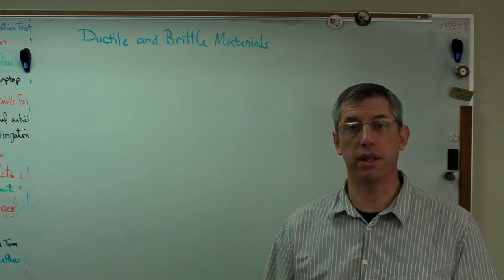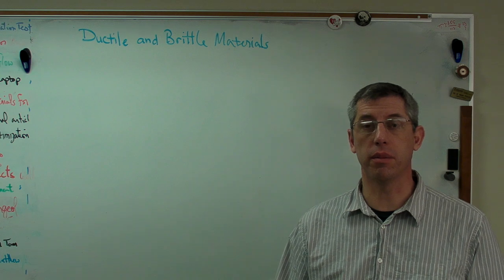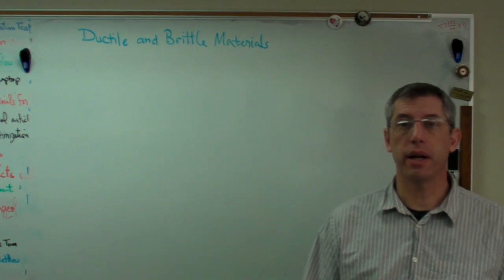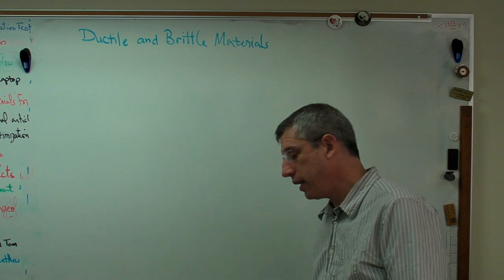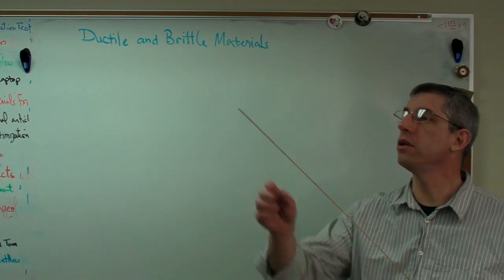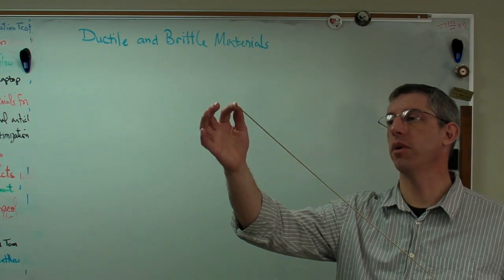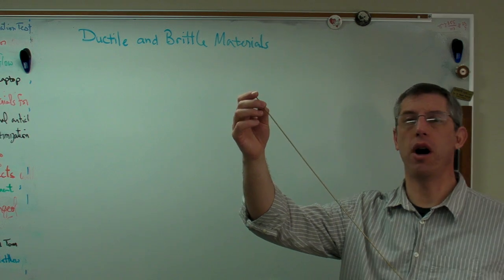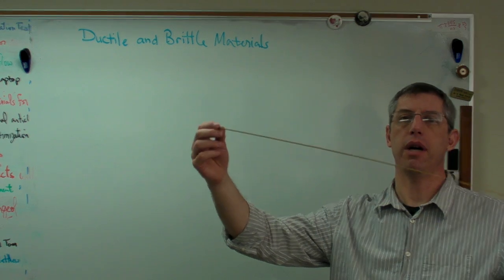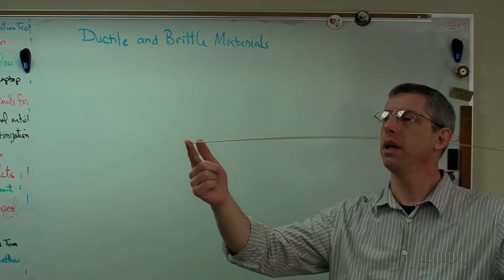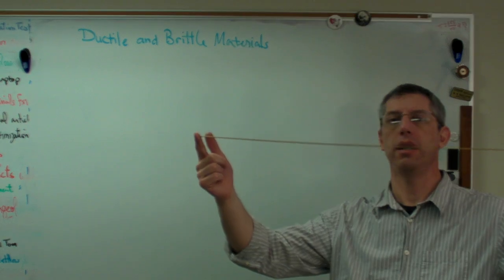It's fairly simple. I've got a couple examples here. If you look at this thing right here, this is a piece of just brass rod, this is actually brazing rod, but it's a soft brass. If I grab it like this and I can bend it, as long as I don't bend too far it'll go back to its original shape, it hasn't permanently bent.